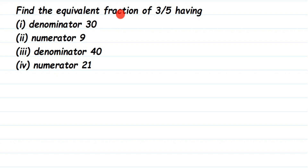So how do we find out these? There are two ways of finding equivalent fractions: one is by multiplying and one is by division. The first problem we have is where the denominator should be equal to 30.